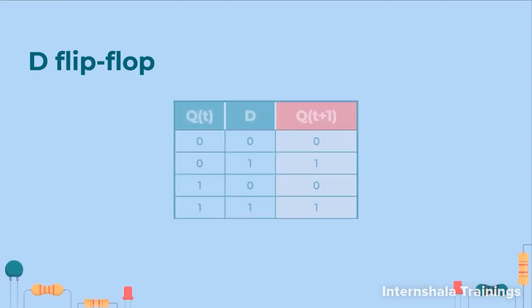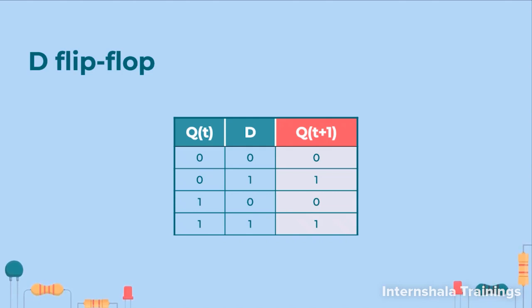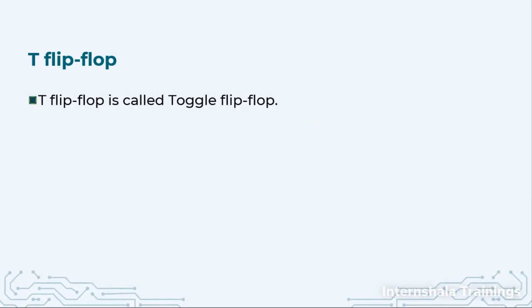The truth table is very simple. I have one input D, and I am also treating the present output Q as an input. Whatever is the value of D, the same will be the value of Q(T+1) — the next output value. It is independent of Q; at every positive or negative edge of the clock, Q(T+1) will be assigned the value of D. The second flip-flop is the T flip-flop, where T stands for toggle.